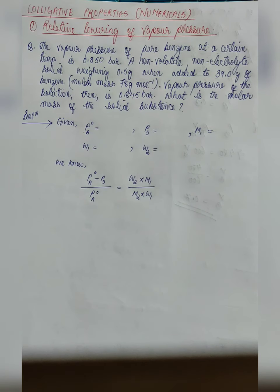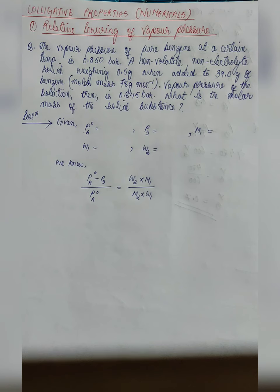In this video, we will try to solve the numerical for the first colligative property, which is relative lowering of vapor pressure. The vapor pressure of pure benzene at a certain temperature is 0.850 bar. A non-volatile non-electrolyte solid weighing 0.5 gram, when added to 39 gram of benzene having molar mass 78 gram per mole, vapor pressure of the solution is 0.845 bar. What is the molar mass of the solid substance?